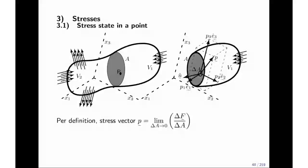This section, this lecture, is about stress, and 3.1 is about stress state in one point, point P in the graphics below. Per definition, there's a stress vector and there's a stress tensor, and they are related to the force and the area of a cut A, also sketched in the graphics.